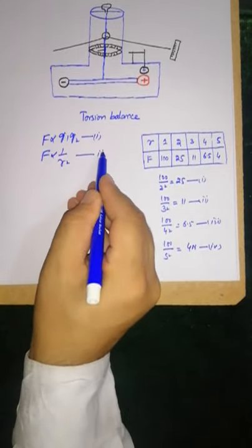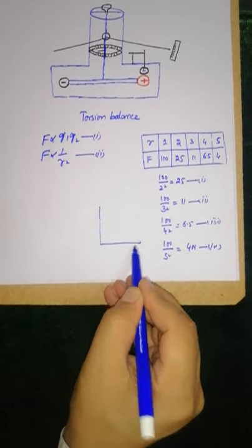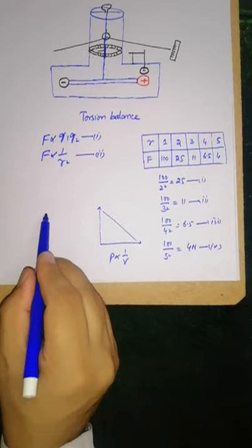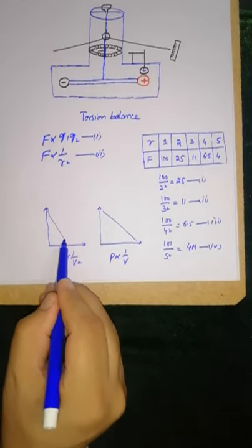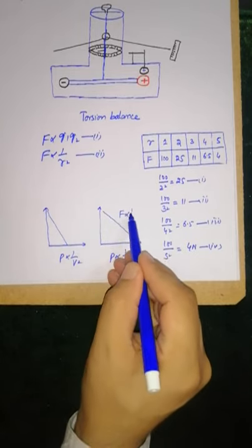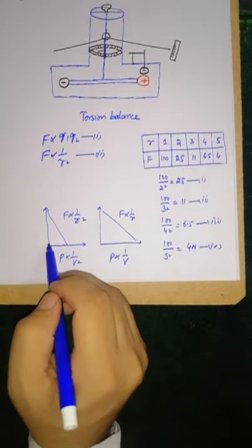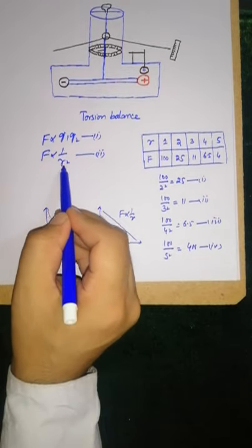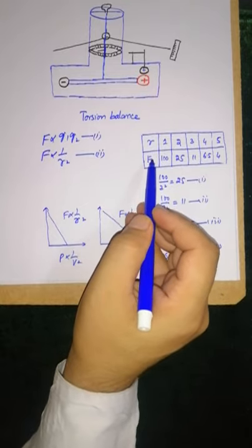If we plot the distance versus force graph, we get the inverse relationship. For example, if P is inversely proportional to V, this is the graph. But if P is inversely proportional to V squared, this is the graph - a straight line. F is inversely proportional to R and F is inversely proportional to R squared. We can see the graph shows it is R squared because the formula is square times. This demonstrates inverse square law.